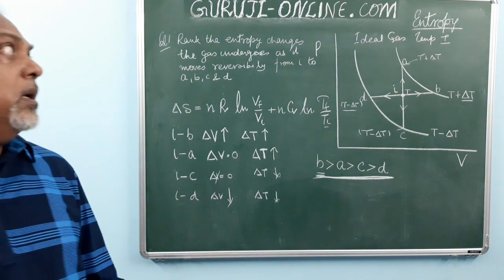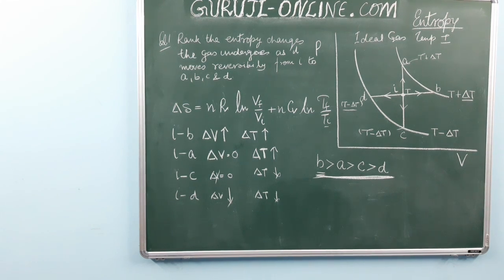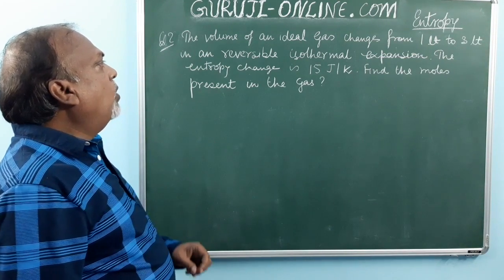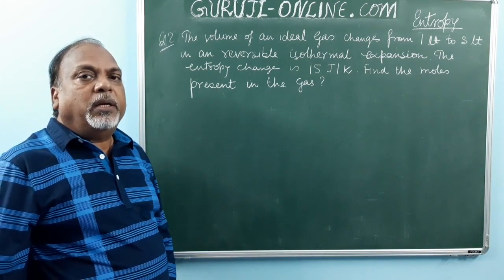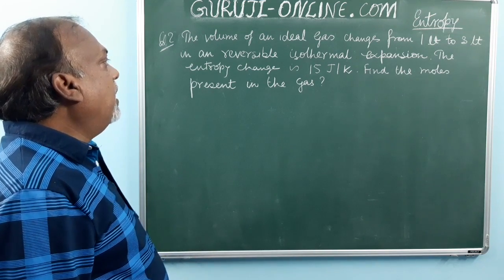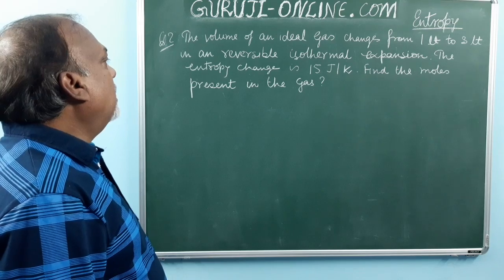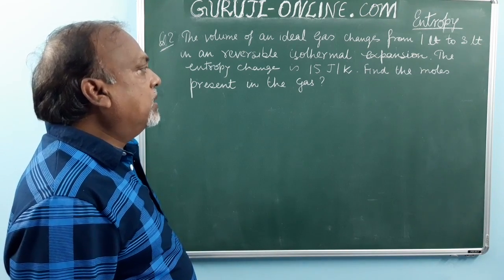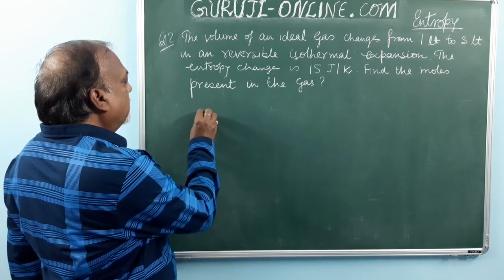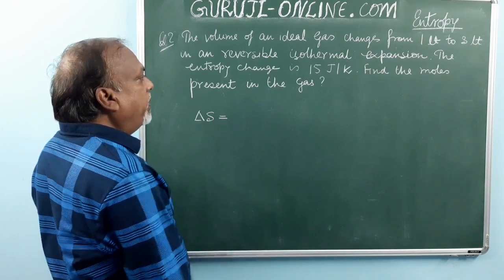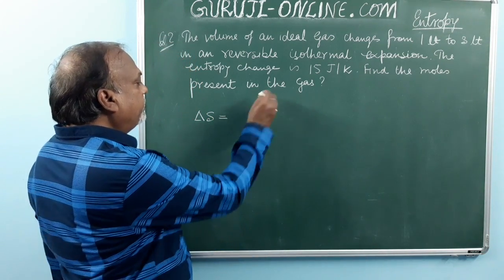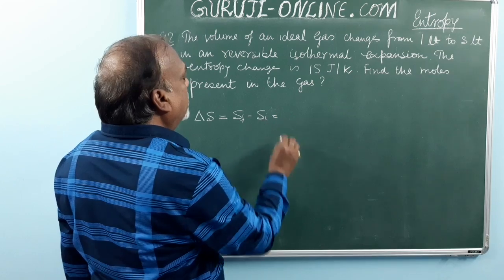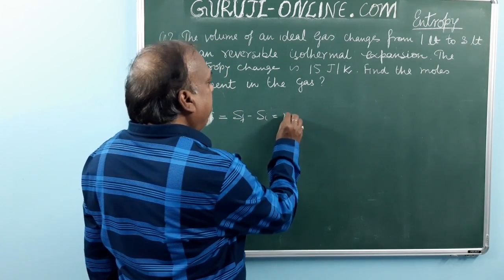Now we will go to the second problem. The volume of an ideal gas changes from 1 litre to 3 litres in a reversible isothermal expansion. The entropy change is given as 15 joules per Kelvin. We need to find the number of moles present. The entropy change formula is: delta S = N R ln(Vf/Vi) + N Cv ln(Tf/Ti).